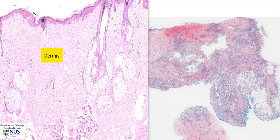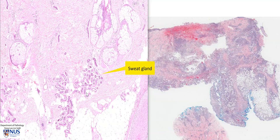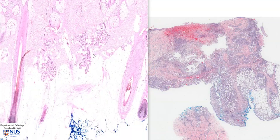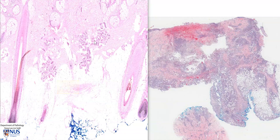Within the dermis, we can see hair follicles, pilosebaceous units with the sebaceous glands here and the hair follicle. We can also see some adnexal structures, such as sweat glands, and then deep to this, we have the adipose tissue that forms the subcutis. You can see that some of the hair follicles also extend into the subcutis.